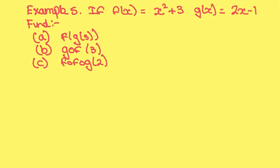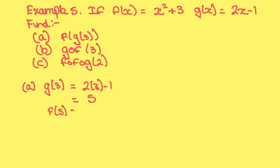You may also be asked to solve numerical composite functions. Example 5. If f of x equals x squared plus 3 and g of x equals 2x minus 1. Part a: find f of g of 3. First input 3 into g of x, so g of 3 equals 2 times 3 minus 1, which is equal to 5. Then do f of 5, which equals 5 squared plus 3, which is equal to 28.